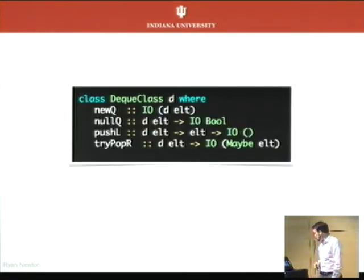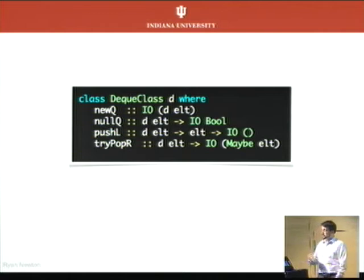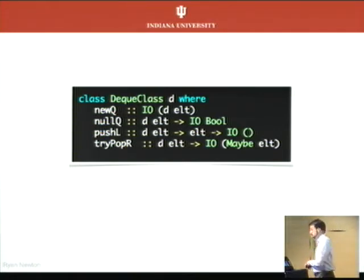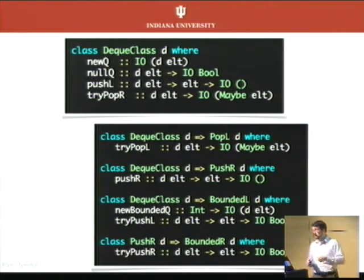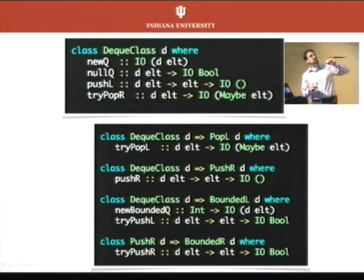What we expose to the user is a little nicer than that. We hide this behind a few simple type classes that encapsulate the basic queue operations: make a new queue, is the queue null, push, try-pop. We have try-pop because there are no blocking operations — everything I'm talking about today has no integration with lightweight threads or OS threads, so there's no notion of blocking. The client at this interface has to handle the 'nothing available' case. Functionality for double-ended queues is in its own type classes.